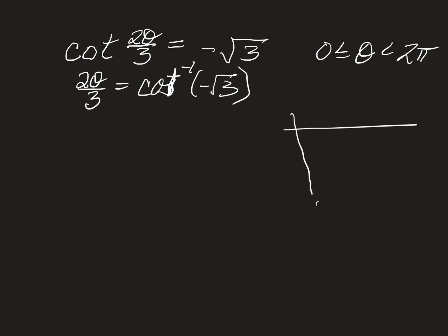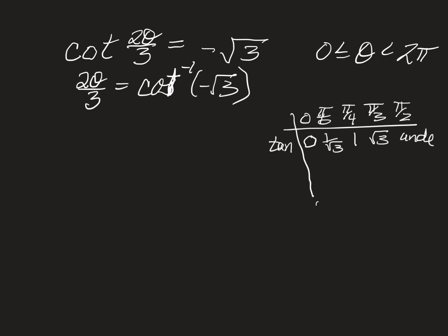If you remember our table — and I draw this over and over and show it over and over — we had these special angles. On this table we had tangent: 0, 1/√3, 1, √3, and undefined. And cotangent, which we never actually wrote on the table, is these in reverse because it's the reciprocal. So it'll be undefined, √3, 1, 1/√3, and 0.